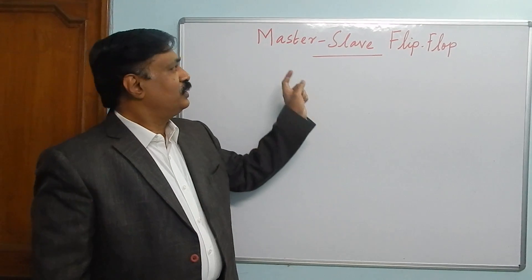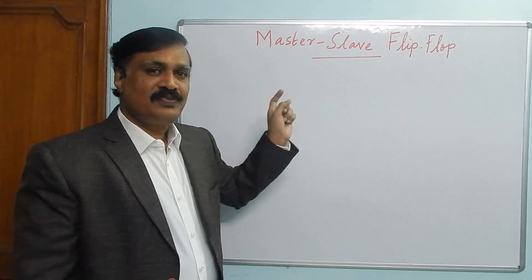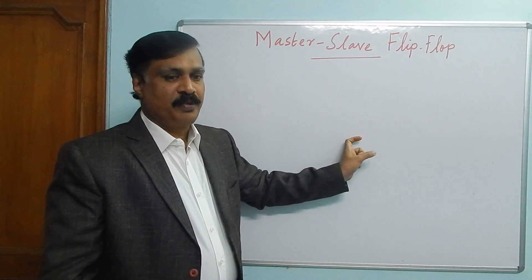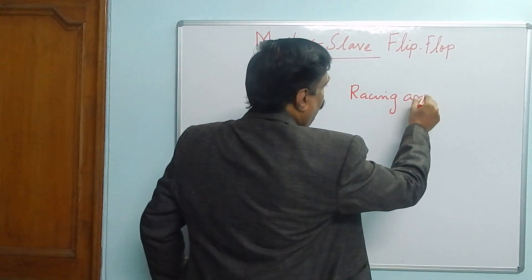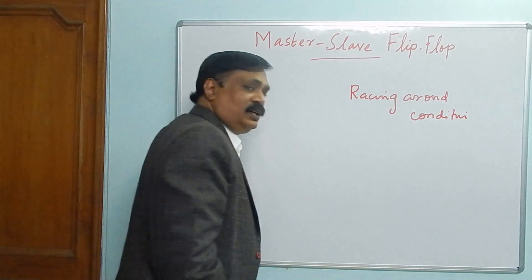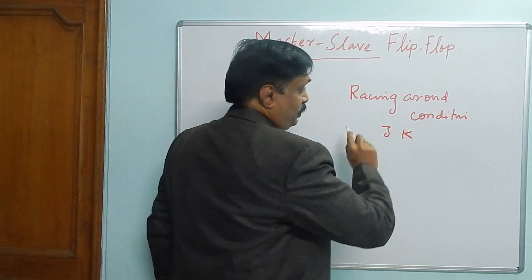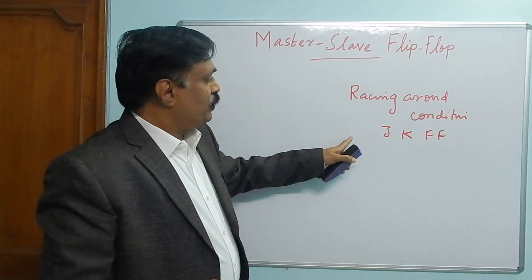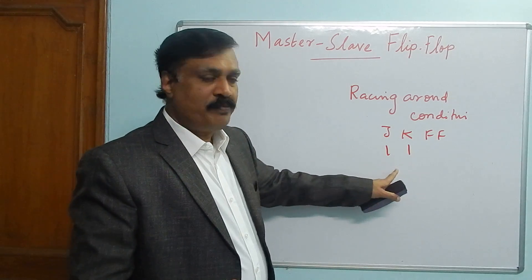Good morning. In this class we are going to see master-slave flip-flop. In the last class we have seen JK flip-flop and the demerits of JK flip-flop - the racing around condition. Racing around condition is the drawback of JK flip-flop. What is the demerit? When you give one-one to the JK flip-flop, it toggles.